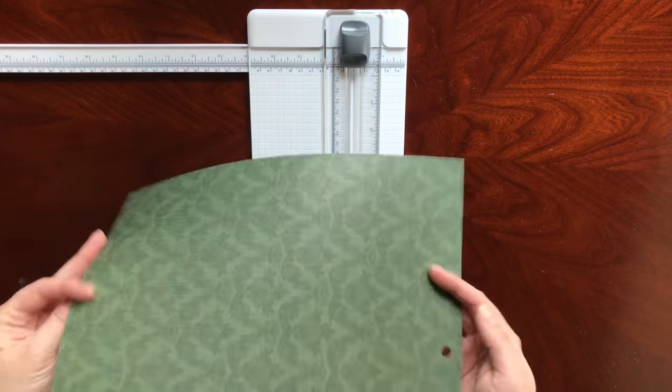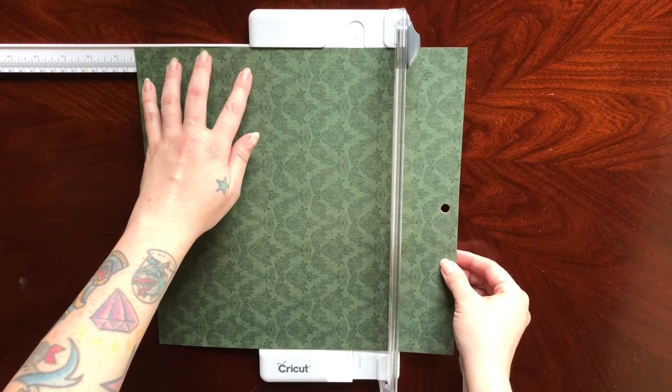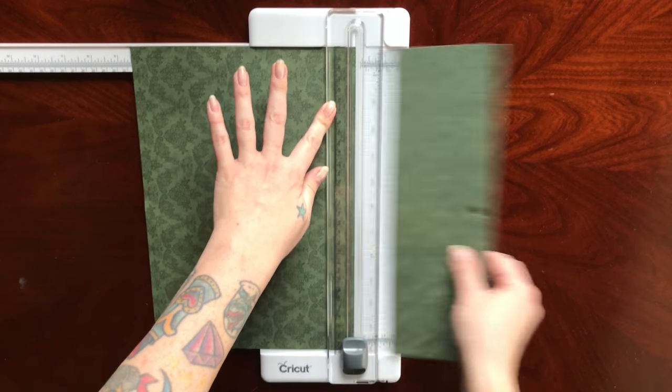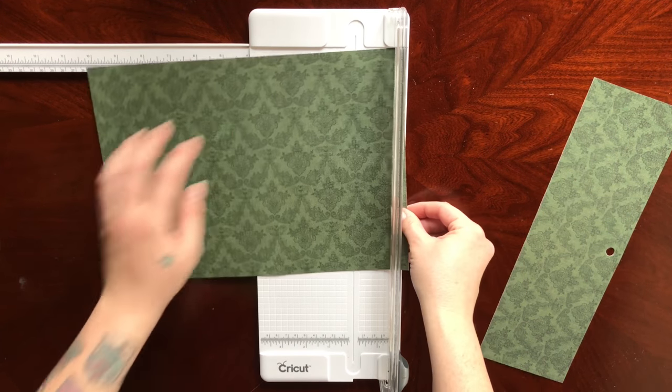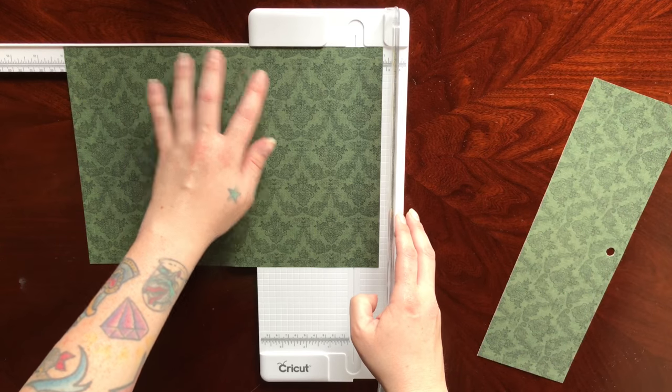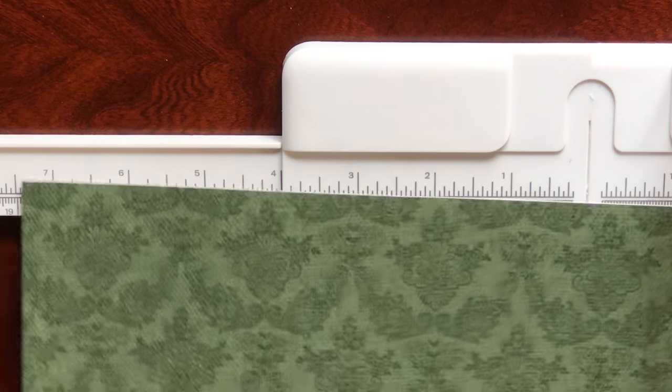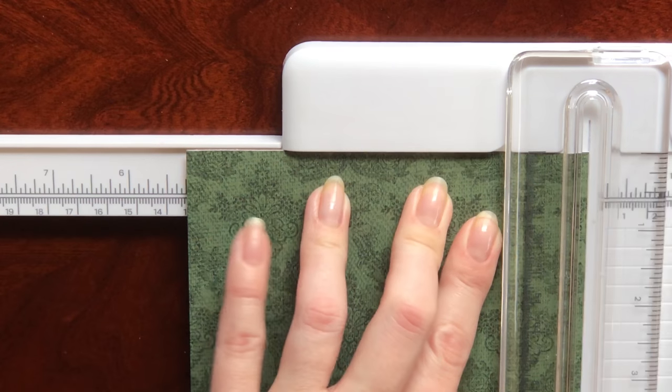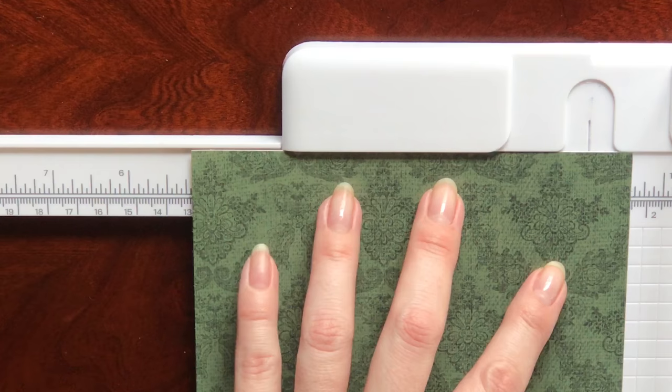First, decide which side you'd like your envelope to show. I really like this one. You're going to cut it at 8½ by 11 inches. Next, cut at approximately 5¼ inches. An 8½ by 11 sheet will give you two envelopes.